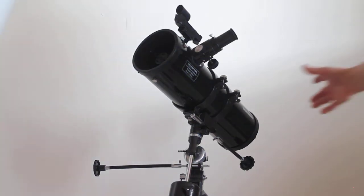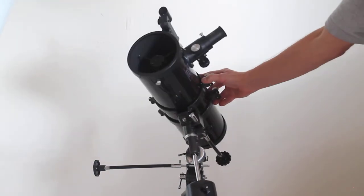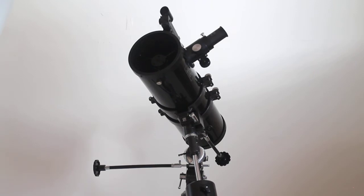It comes with a couple of eyepieces to get you started, which give you 40 times magnification, which is ideal for looking at rich field star clusters and basically just finding your way around the night sky and getting used to focusing.